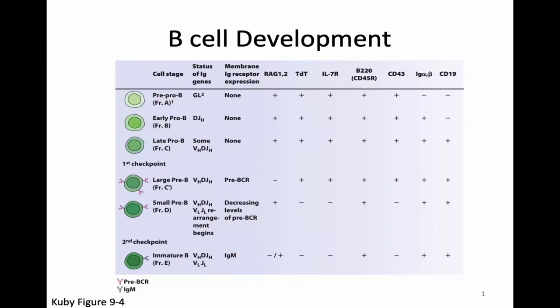The pre-BCR is used by that pre-B cell to do a number of signaling events, and once the signaling is complete, we will see light chain rearrangement in that pre-B cell. When the cell is finished with its light chain rearrangement, it will then have both a heavy chain and a light chain made, and it will express that IgM on its surface as an immature B-cell.